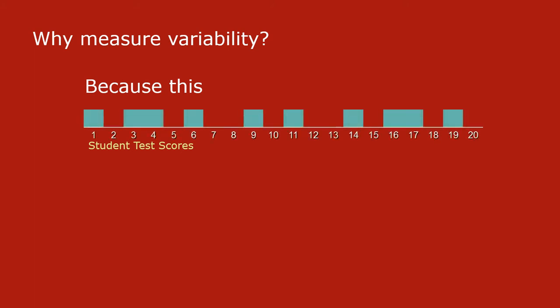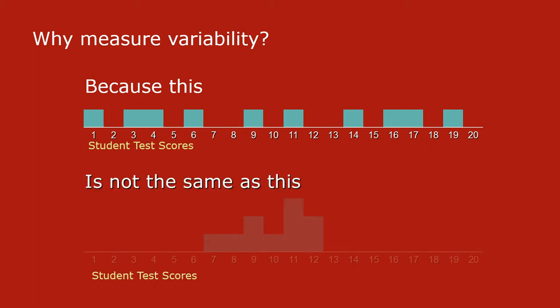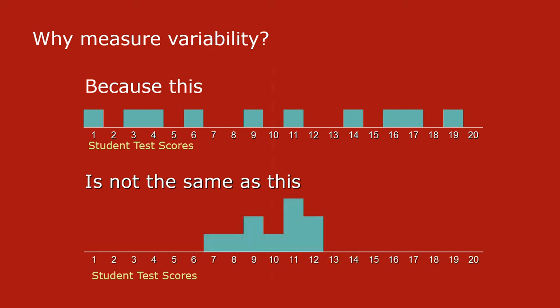So why do we measure variability? Let's look at some students' test scores. Let's imagine there are 10 students with test scores going from 1 to 19 on some test. These two things are not the same — this is a different class of 10 students — but their means are the same. So in addition to a mean, you need variability to describe what's going on in a dataset. You just can't describe what's happening in a dataset unless you're using variability. If you describe the center and the spread together, you've gone a long way towards really understanding what's going on in that data.